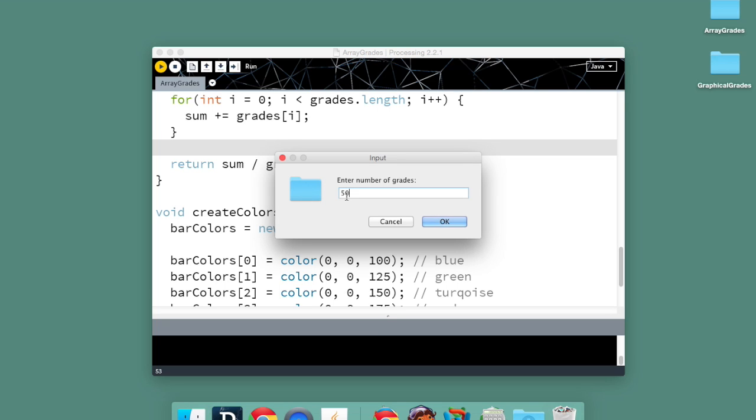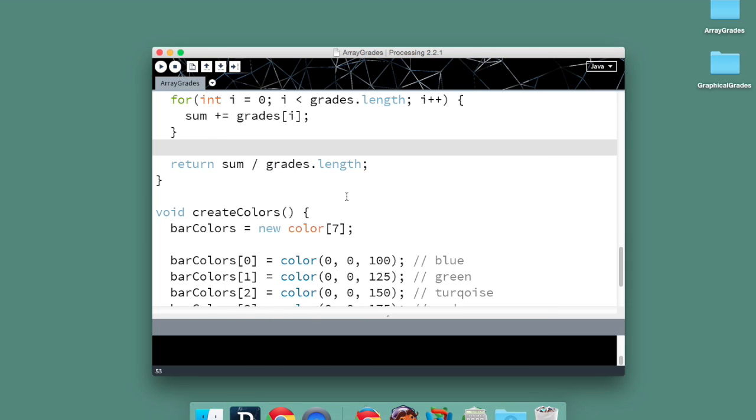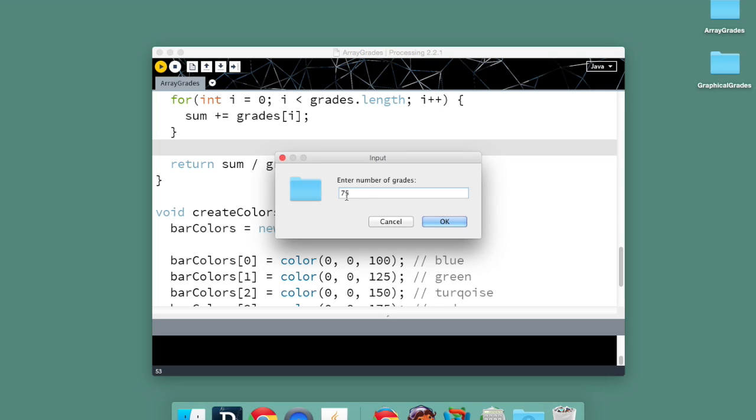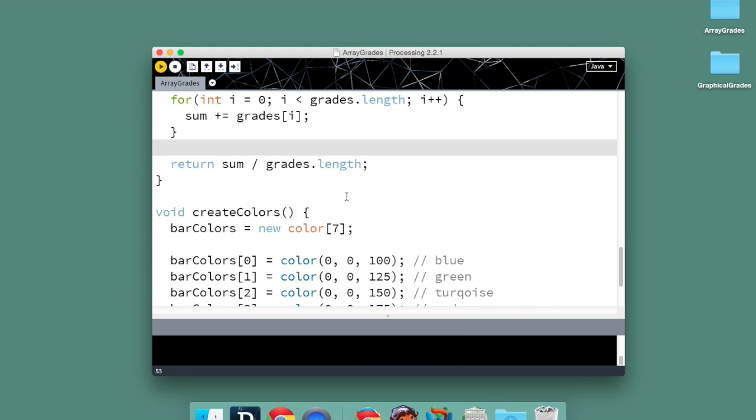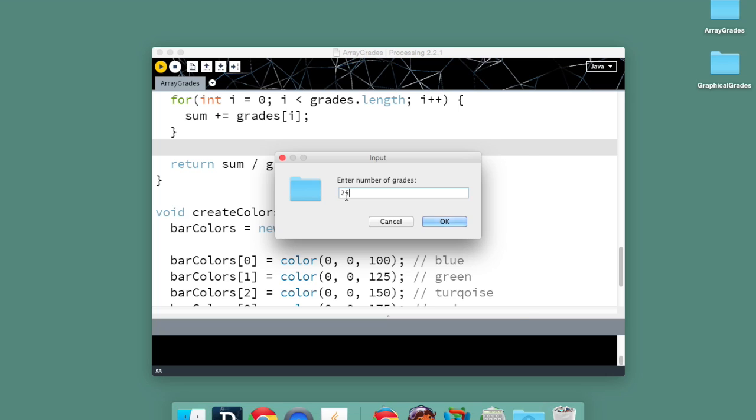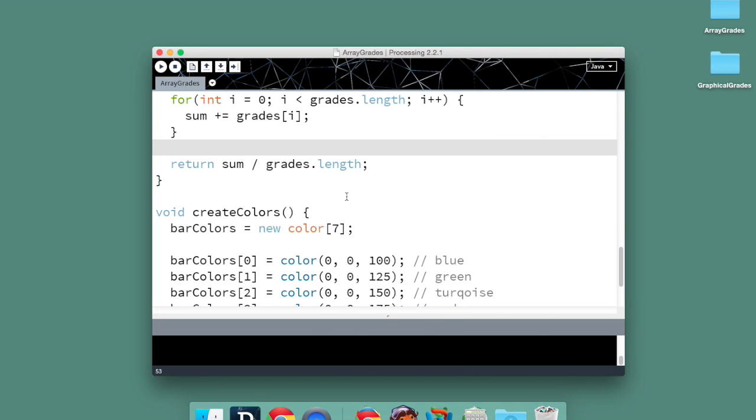So let's just create one with 50 random grades, and there's some output. Now, again, what do I have to change to make that work differently? Well, what if I have 75 grades? I didn't have to change anything. What if I had 25 grades? Didn't have to change anything. So, there's our justification. It makes our program much more flexible, much more powerful.